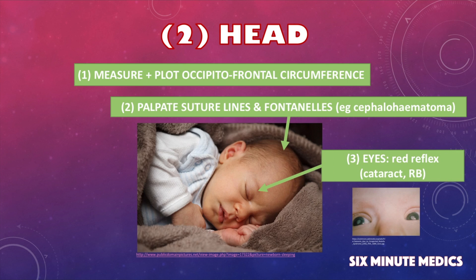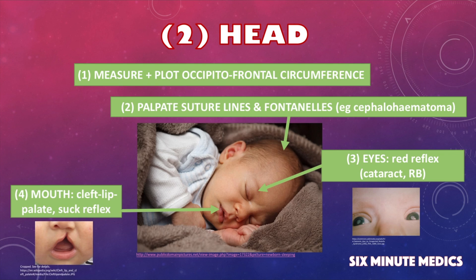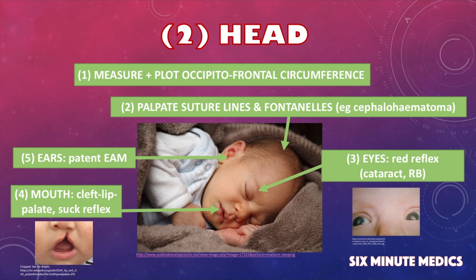Have a look at their eyes and using an ophthalmoscope try and elicit a red reflex bilaterally. This excludes the potential diagnosis of congenital cataracts and rarely a retinoblastoma. Have a look at their nose and mouth — it is important at this point to exclude a cleft lip or palate. You can also test their suck reflex by placing a gloved finger inside the baby's mouth, asking the parents if it is okay first. Have a look at the size, position, and shape of the ears — do they have a mobile pinna and a patent external auditory meatus?